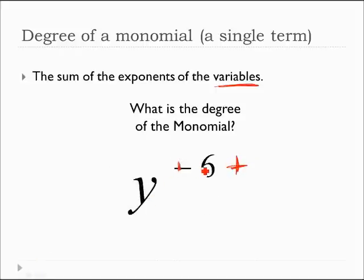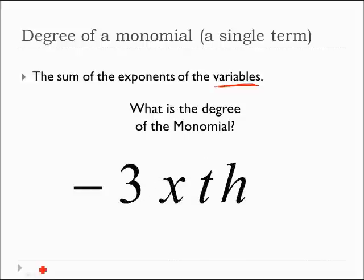y to the negative 6. Did I trick you? y to the negative 6 is not a monomial, because it has a negative exponent, which is not a whole number exponent. So please remember, even when we're asking questions about the degree, it's still important to recognize whether it actually is a monomial or not, and this one is not.